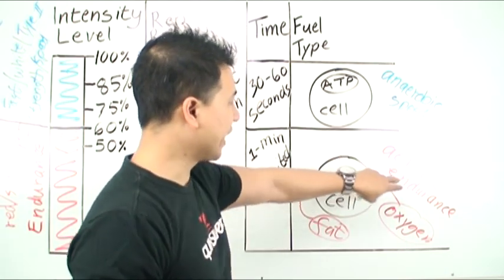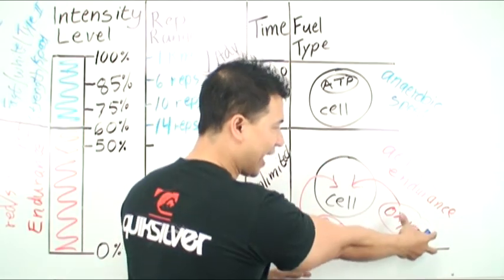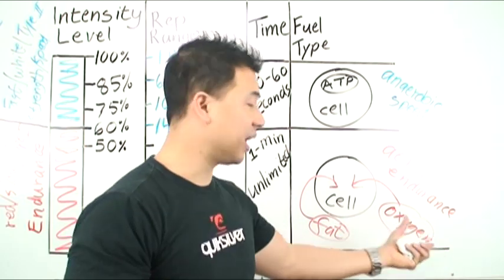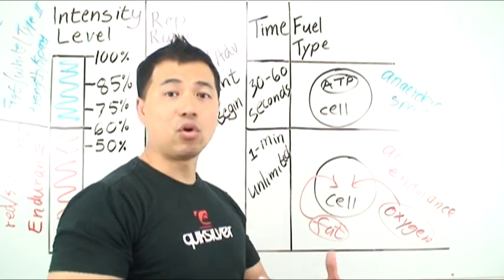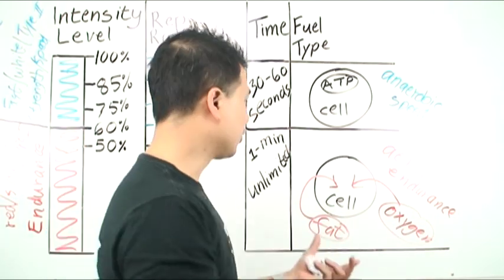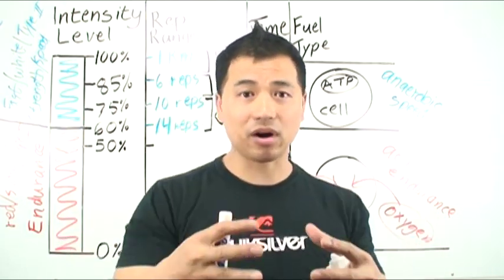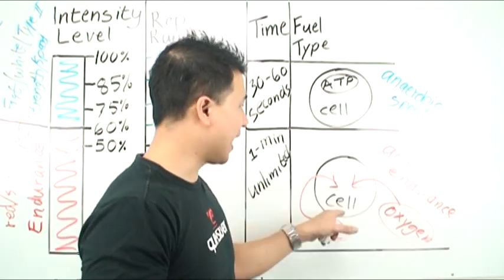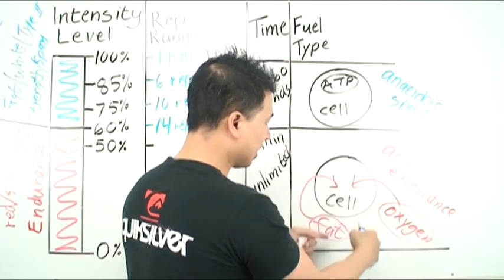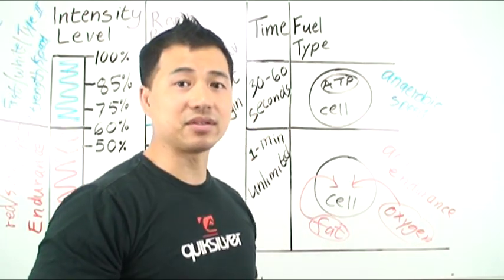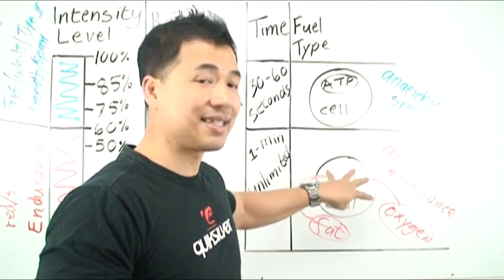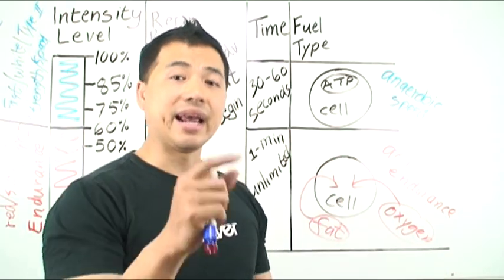In order for these aerobic endurance fibers to burn, it has to combine oxygen from your blood and the fat in your blood or the glucose, and mixes it inside the cell. That's how it burns and works. This takes time for the cell to bring the oxygen and the fat inside the muscle cell to burn it.